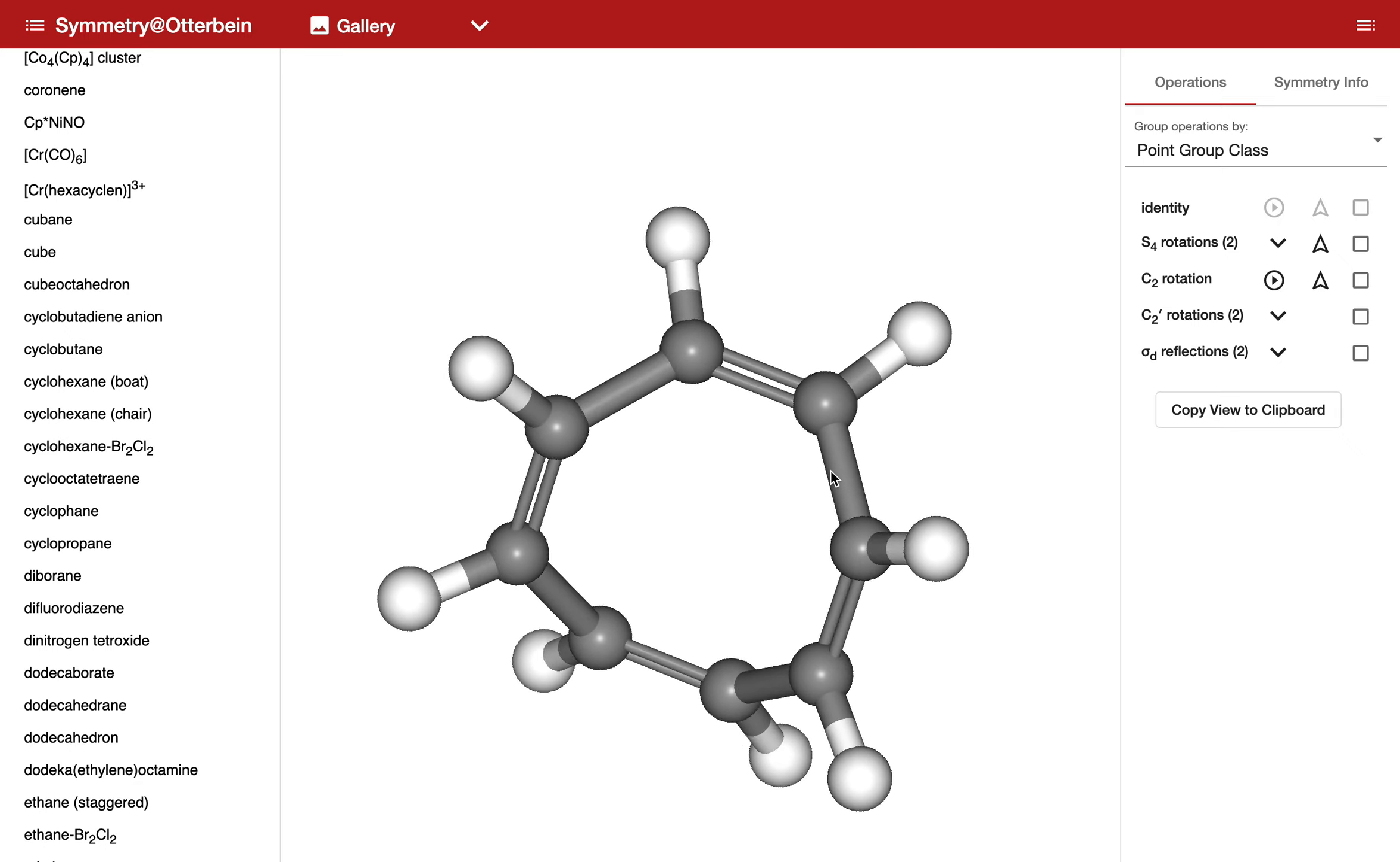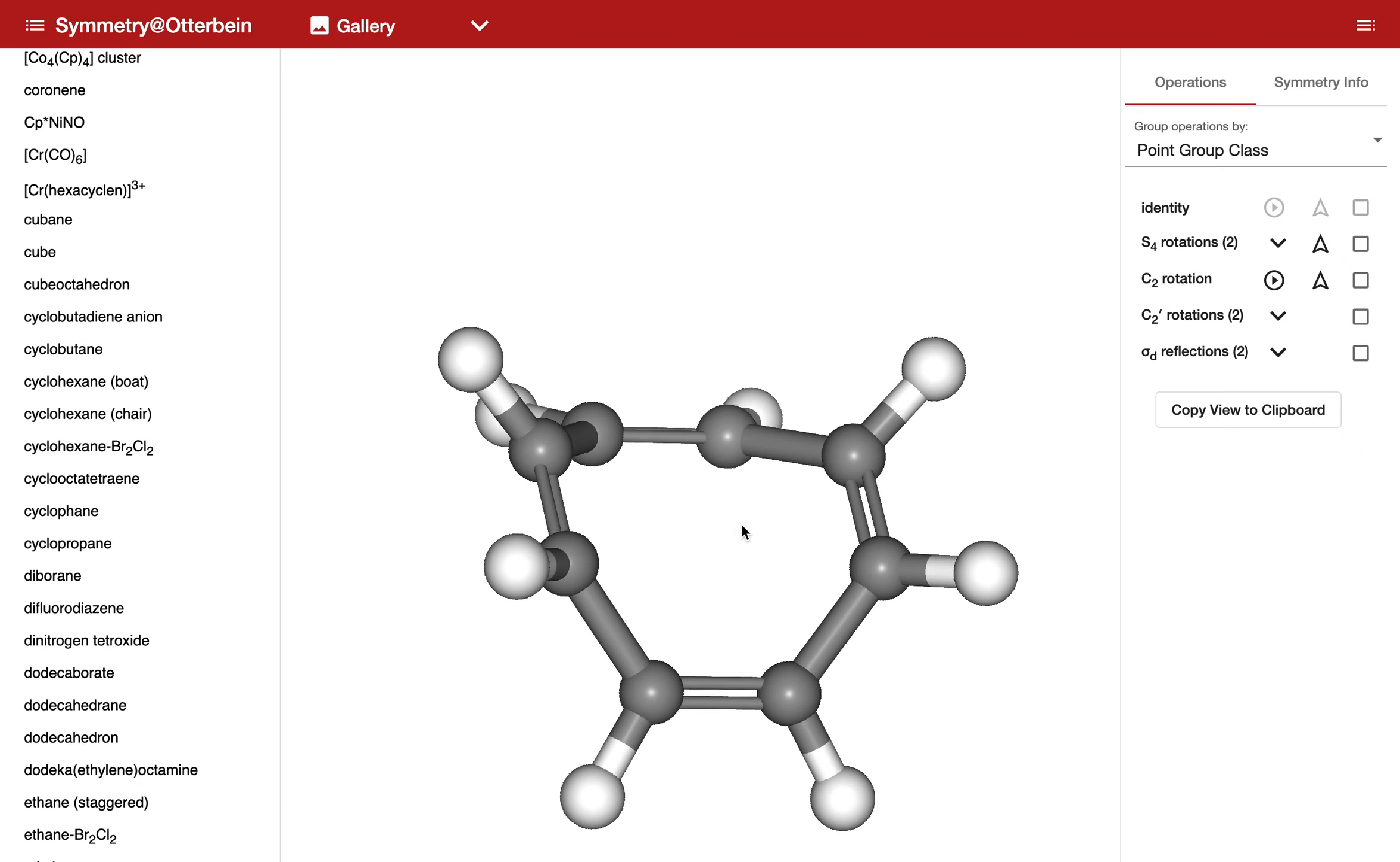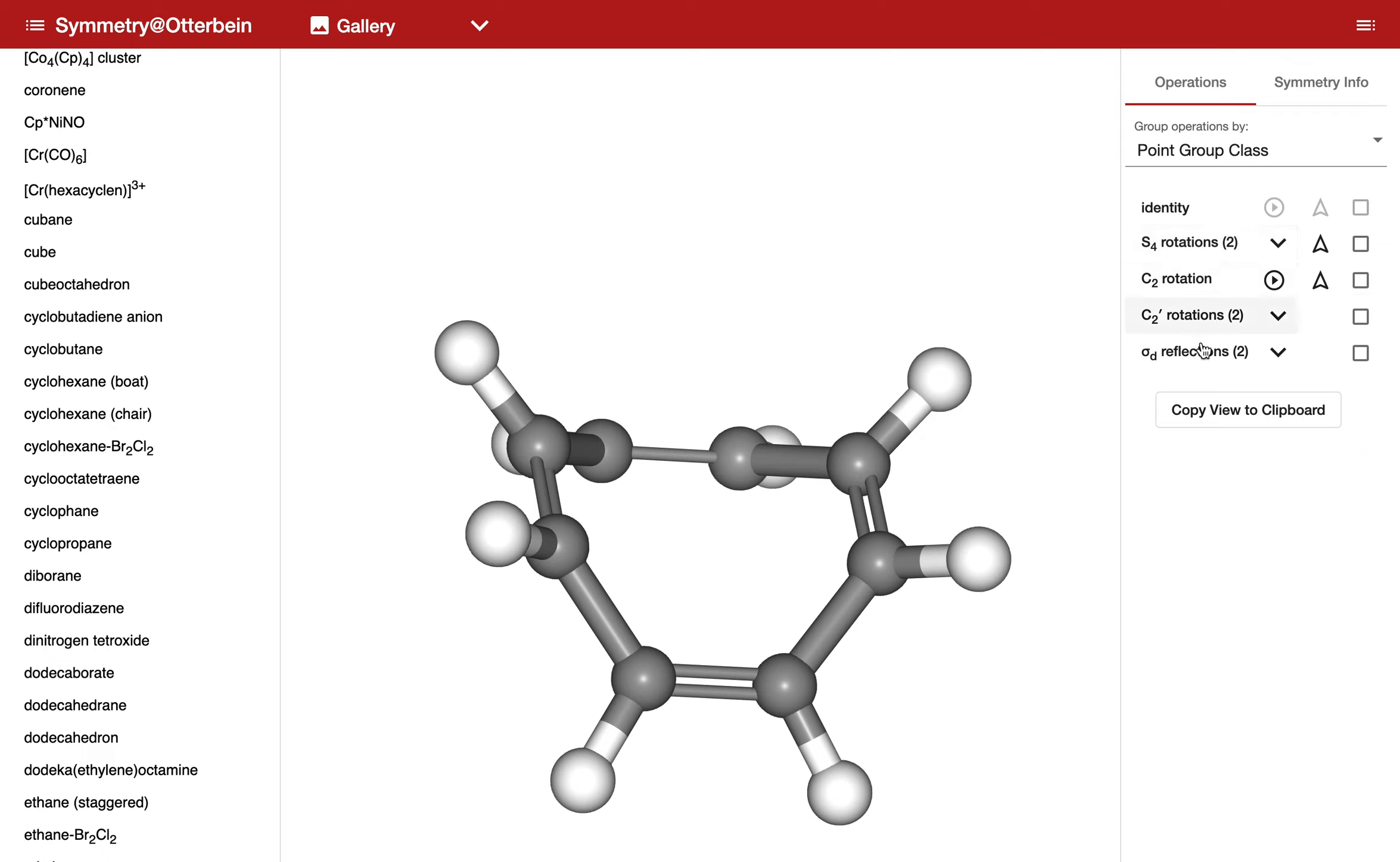Now as we rotate it around, we can see it. Now you can see the different symmetry elements associated with cyclooctatetraene listed over here.